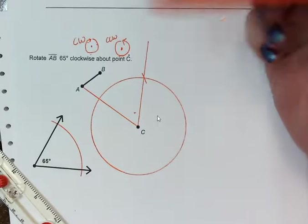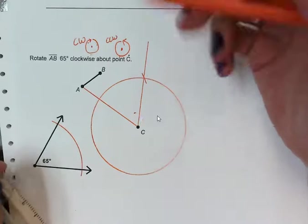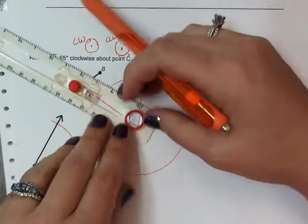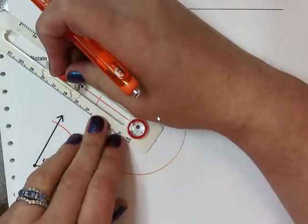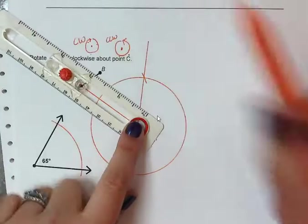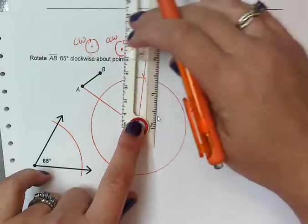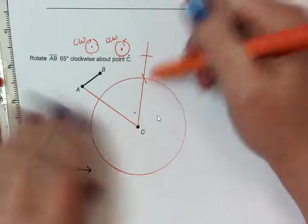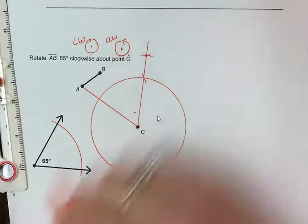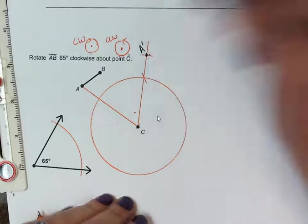We're going to leave off the congruent marks because we don't need to add extra marks and make it even more messy. Now we're going to copy our segment, so measure C to A. Without changing your radius, you're going to swing your compass over to that line that we drew and mark it off. This distance here is the same distance as C to A. So that point where our mark and our line intersect, that point is going to be A prime.